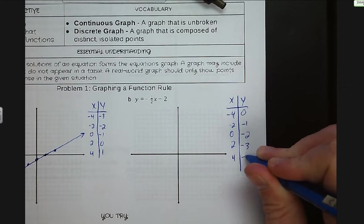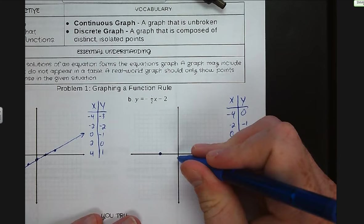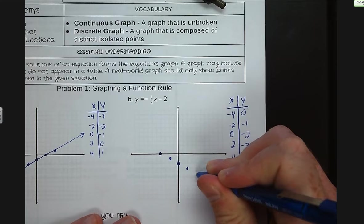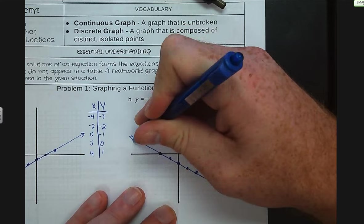We can go ahead and graph these points: negative four, zero; negative two, negative one; zero, negative two; two, negative three; and four, negative four. Again, we draw in our line — it goes to the edges of your coordinate plane, is straight, and has arrows at the end.